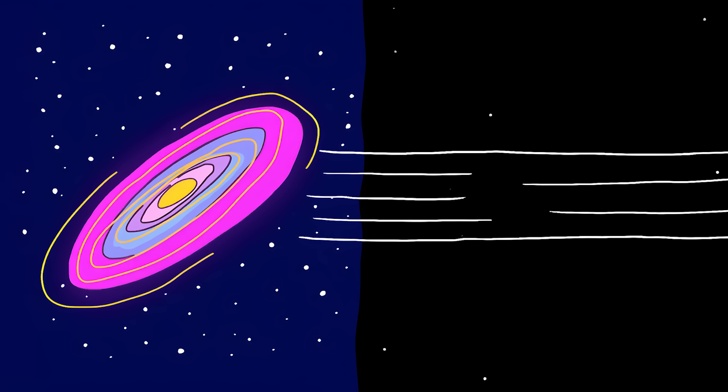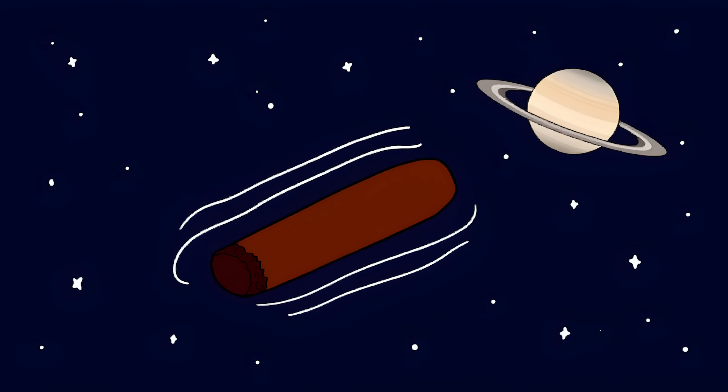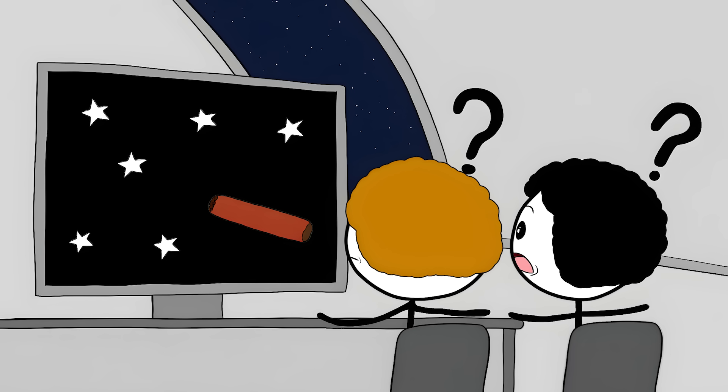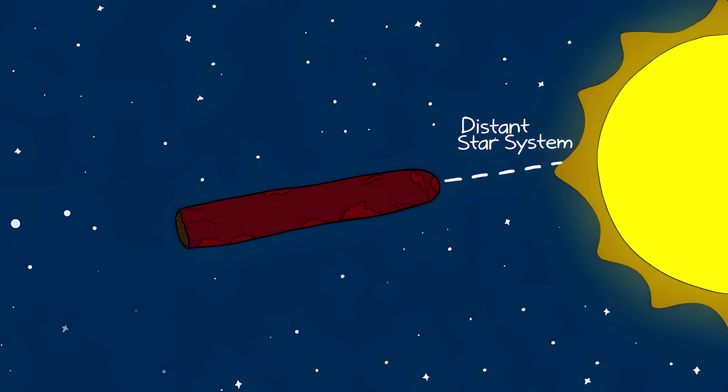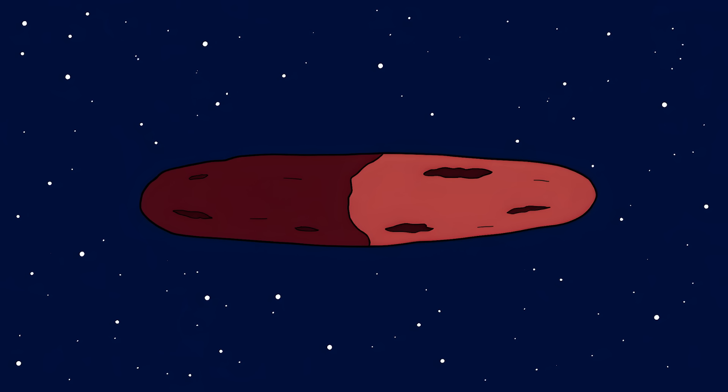Number one, the interstellar cigar. In 2017, scientists spotted something that made them question everything they knew about space: a visitor from another star system. They called it 'Oumuamua, which means 'scout' in Hawaiian. This thing was shaped like a giant space cigar, an object 10 times longer than it is wide.